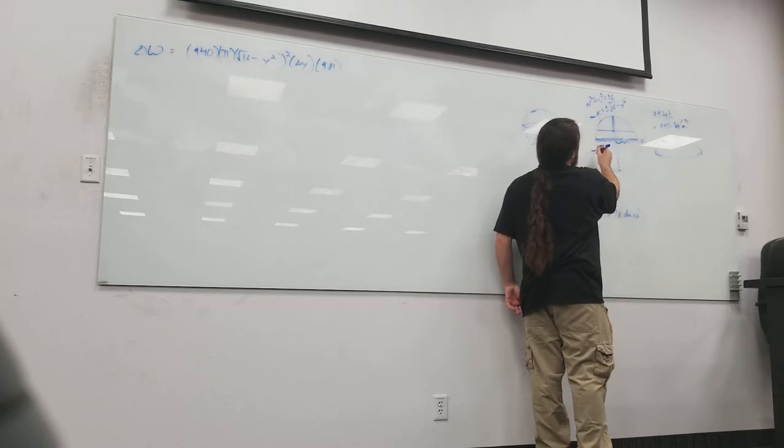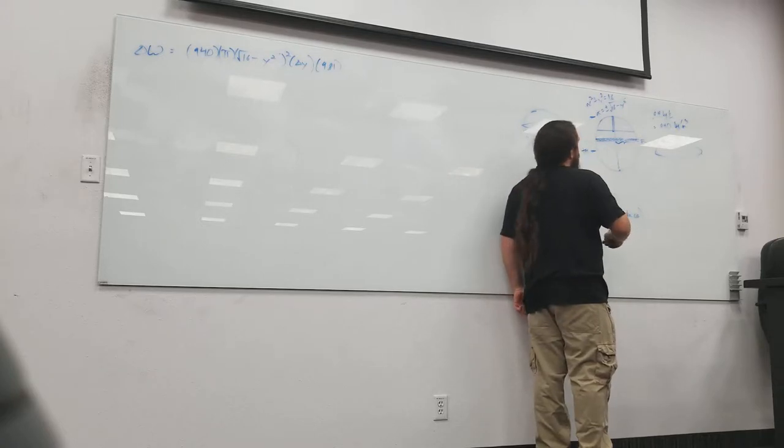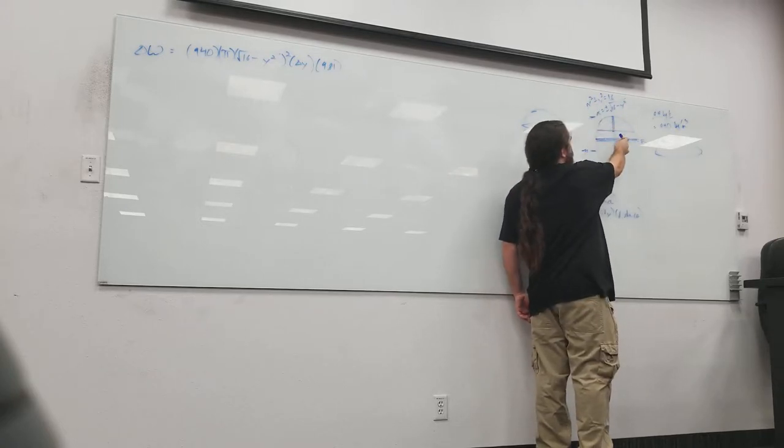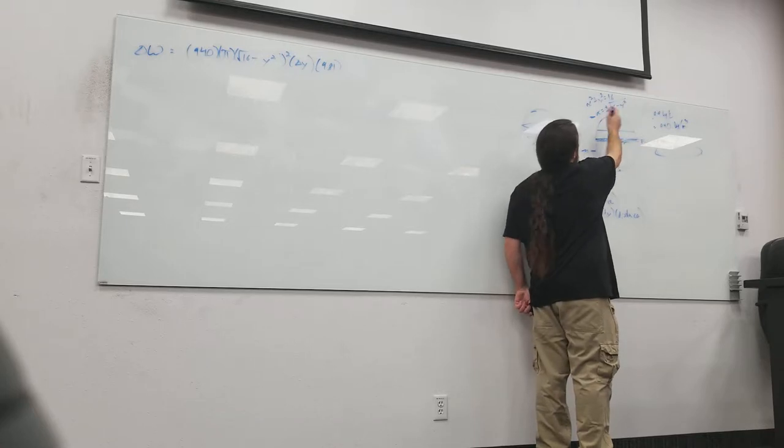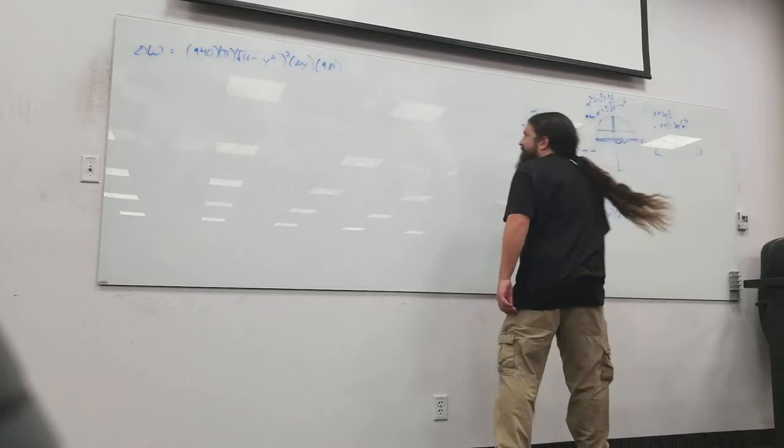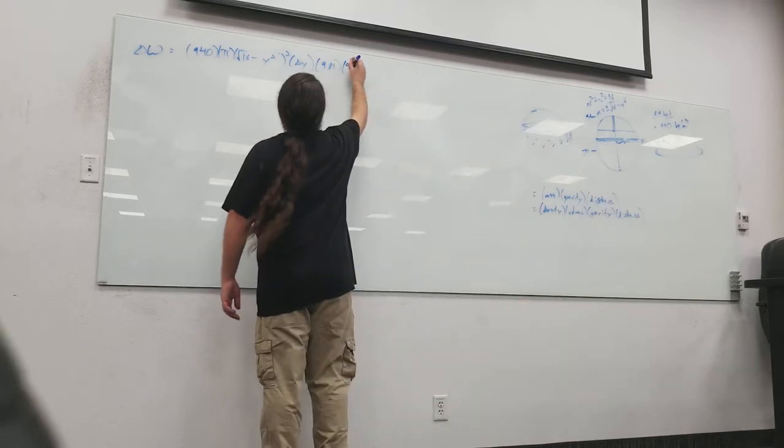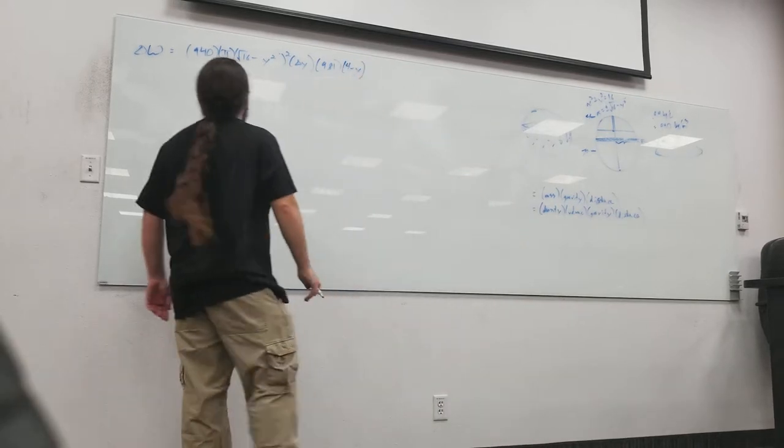It needs to go from where I am, which is I have y, to the top of this tank. Now, I've got this thing centered at the origin, and so the top of the tank to me is 4, so 4 minus y.